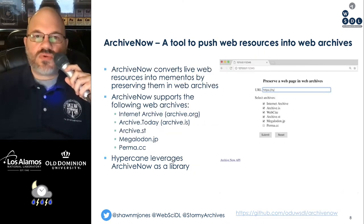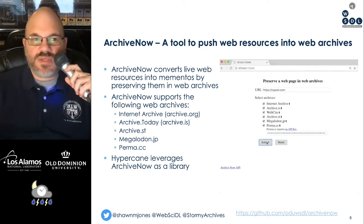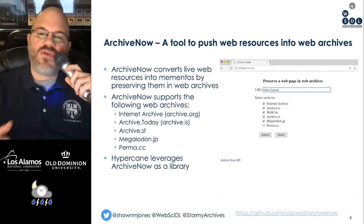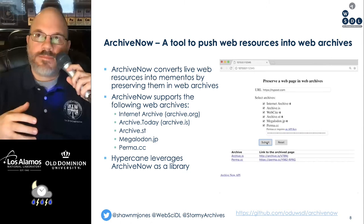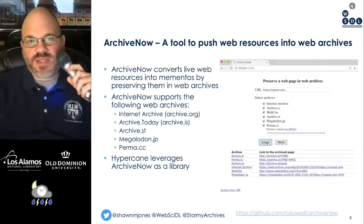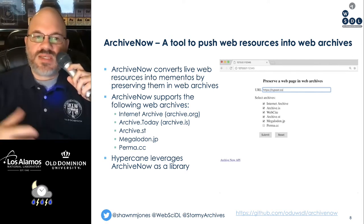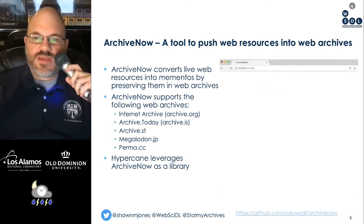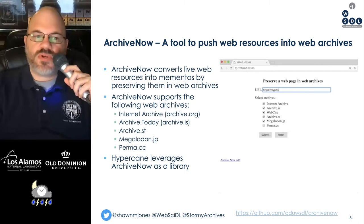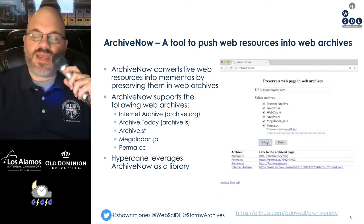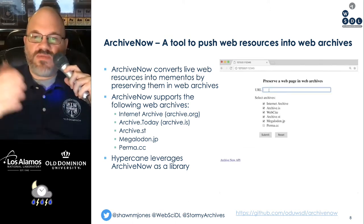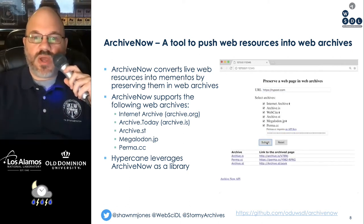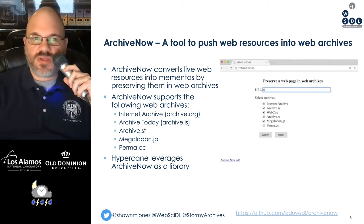ArchiveNow is a tool to push web resources into web archives. It converts live web resources into mementos by preserving them, and takes care of all the weird idiosyncrasies between the different SavePageNow capabilities of different archives. The Internet Archive and ArchiveToday are supported, as is ArchiveST, Megalodon, and PermaCC. Hypercane calls it as a library, so even though ArchiveNow is shown here as a web service, you can call it as a library as well, which is how Hypercane performs some of these conversions.